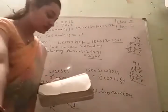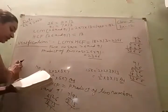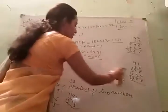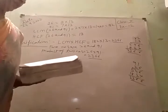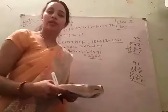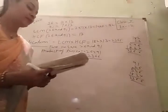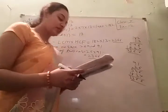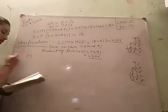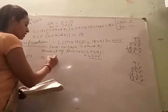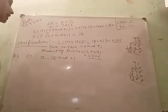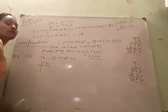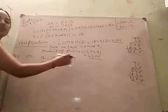This is your second question. Third question: Find the LCM and HCF of the following integers by applying the prime factorization method. You need to find the prime factors first, then find LCM and HCF the same way as before. Question 3 first part has three-digit numbers.